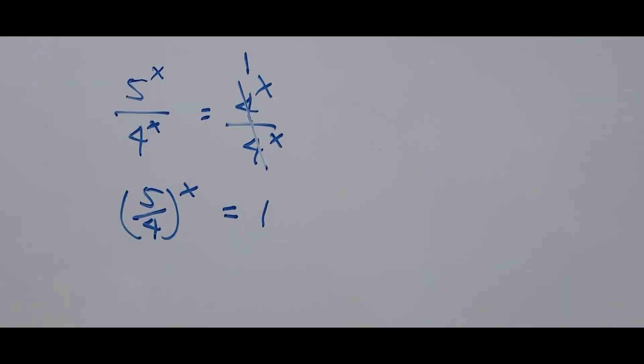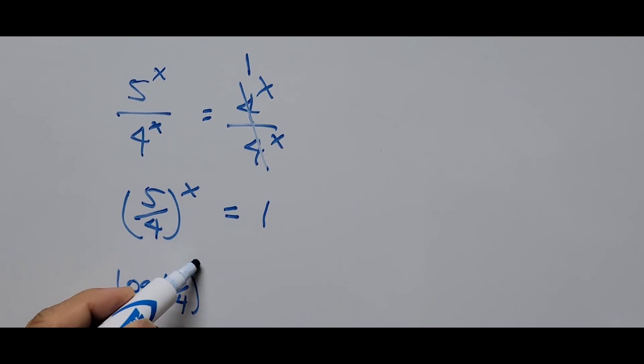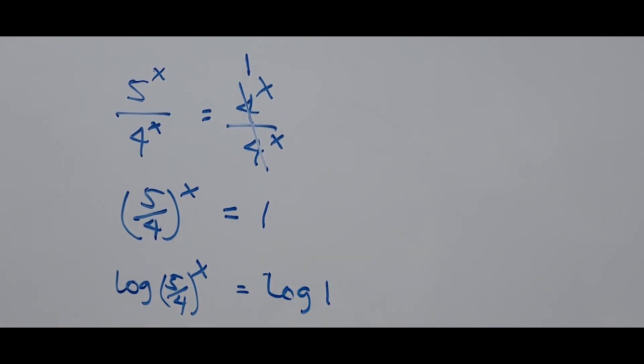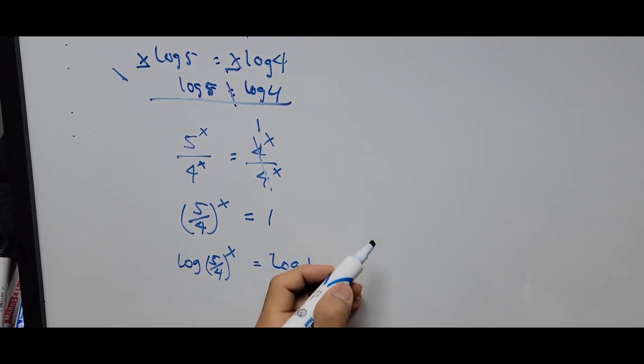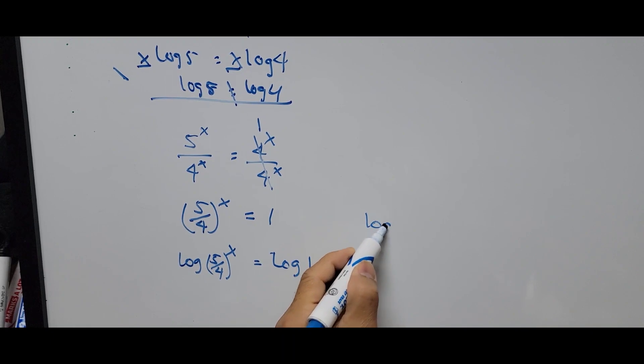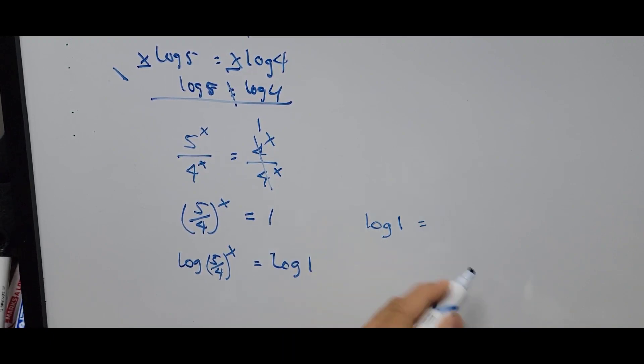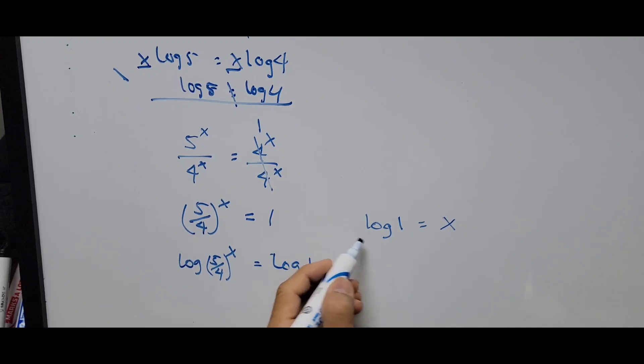From here we can use the laws of logarithm. Log of 5 over 4 to the power X equals log of 1. The value of log of 1 is 0.